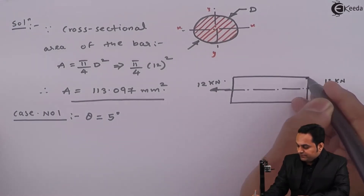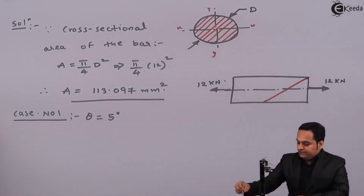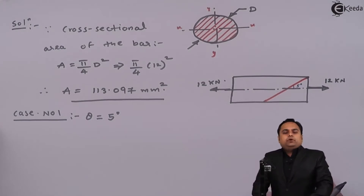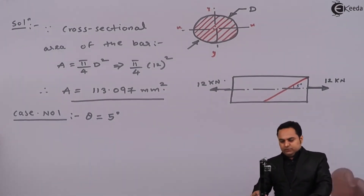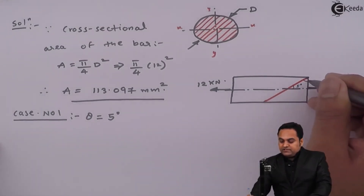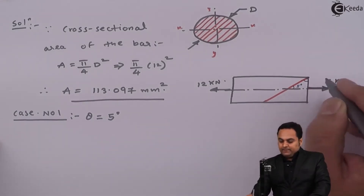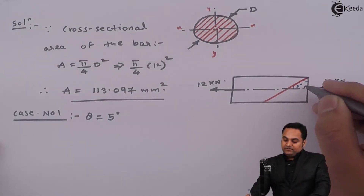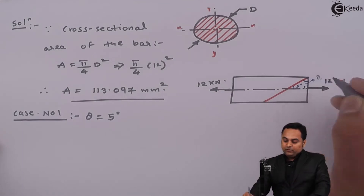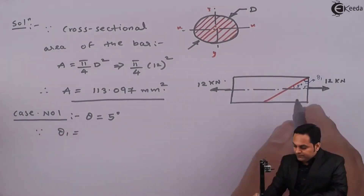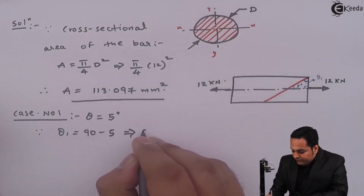Let me explain with a diagram. This is the inclined plane and its angle with respect to the axis is given as 5 degree. But when solving problems related to principal stresses and planes, the angle required is the angle made by the plane with respect to the vertical, because while deriving the formula the angle was taken with respect to the vertical. In this triangle the angle is 5 degree, this is 90, so the remaining angle is 90 minus 5. I will call this theta 1, so theta 1 = 90 − 5 = 85 degree.